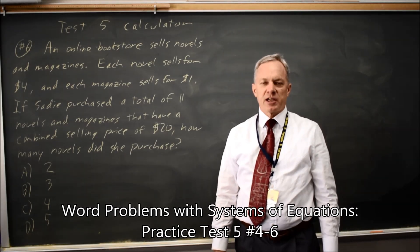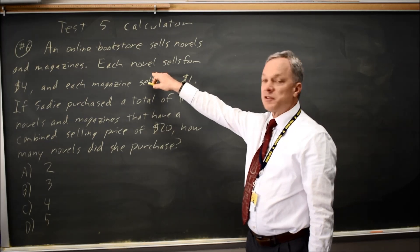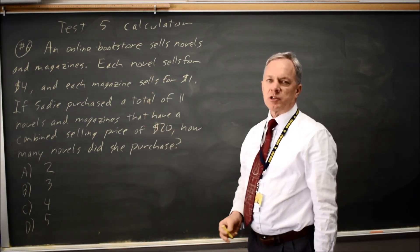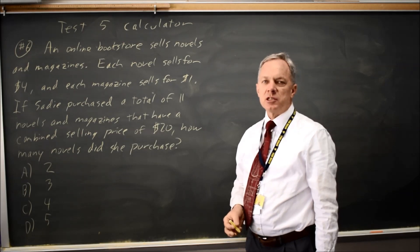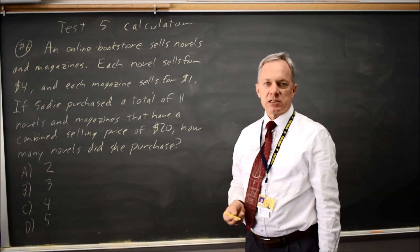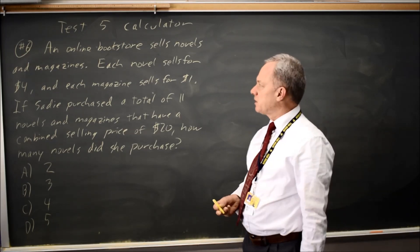This is SAT test five calculator question number six. College board describes the numbers of novels and magazines in two different ways, and typically when you describe the same numbers in two different ways, what you have is a system of equations. College board asks six system of equations test questions per exam, so you want to be very good at these.